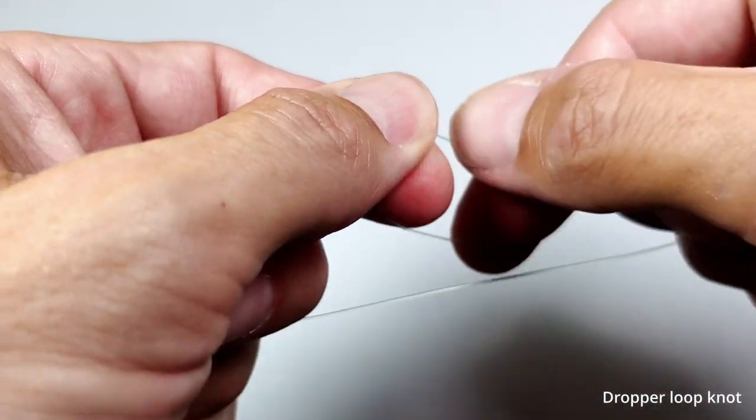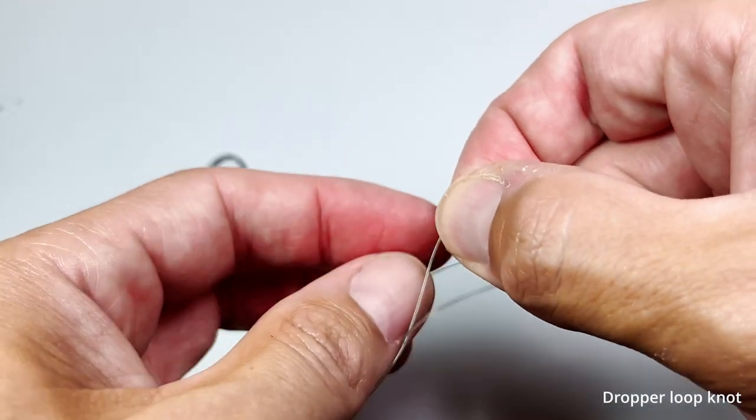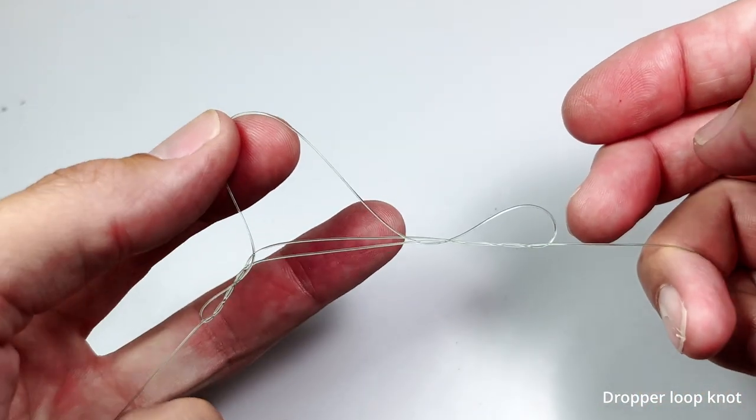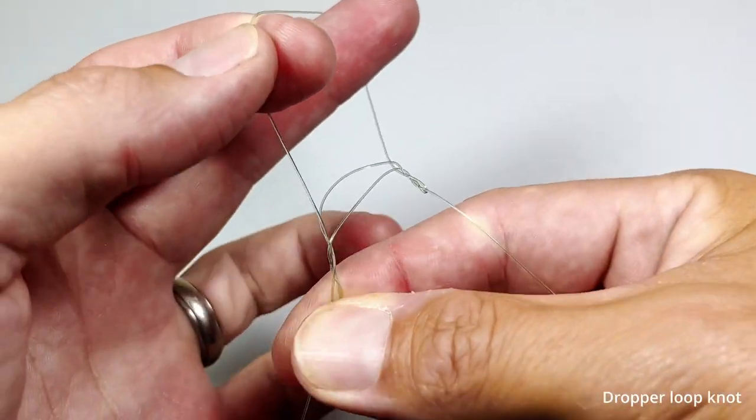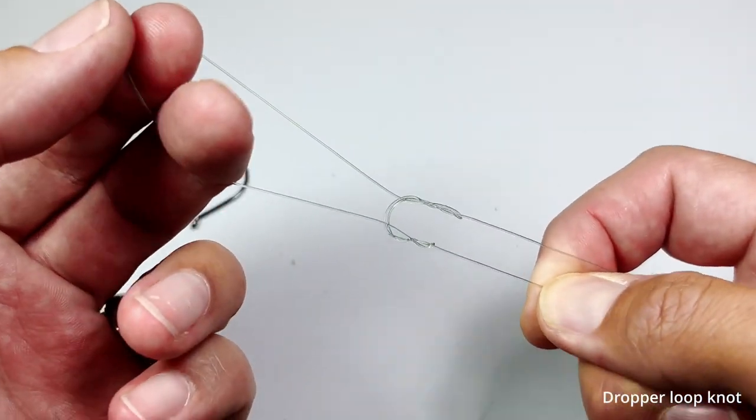You then reach through the twist and grab the loop on the other side. Hold the loop with one end and the ends in the other, and slowly pull the line taut.